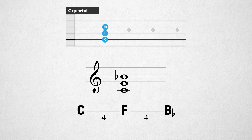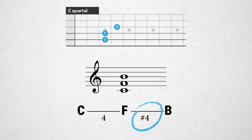In the key of C major, the B flat should be a B, but it is still a quartal chord, now built from a perfect fourth and an augmented fourth: C, F, and B. So that's possible too.